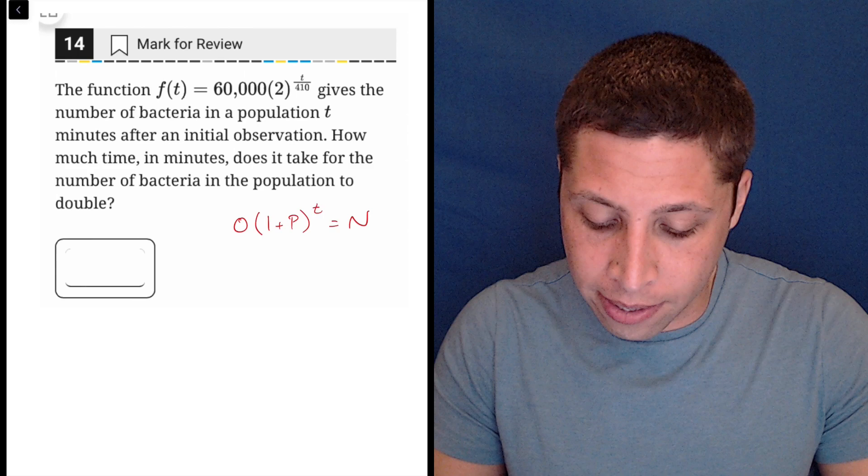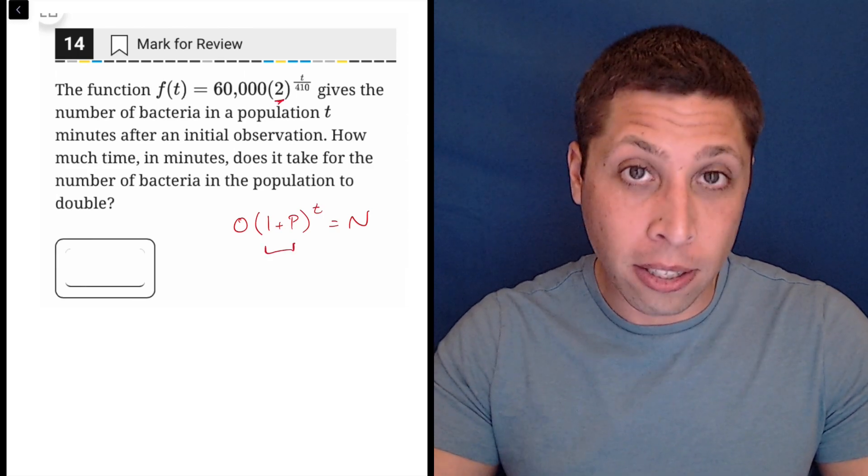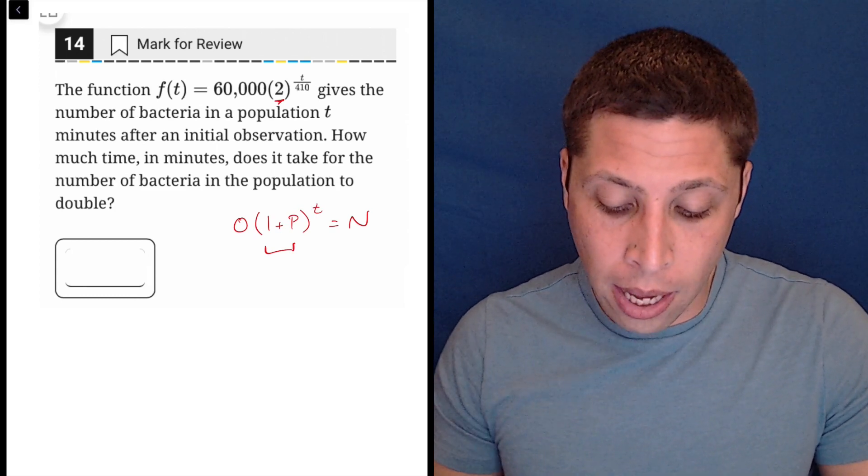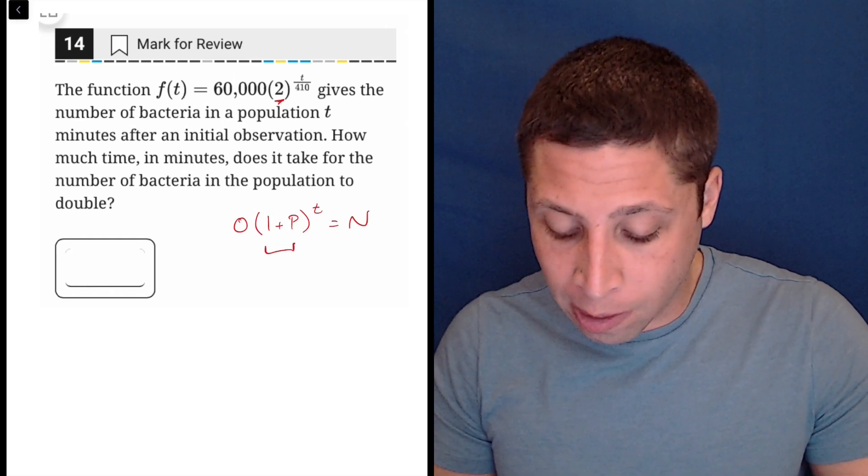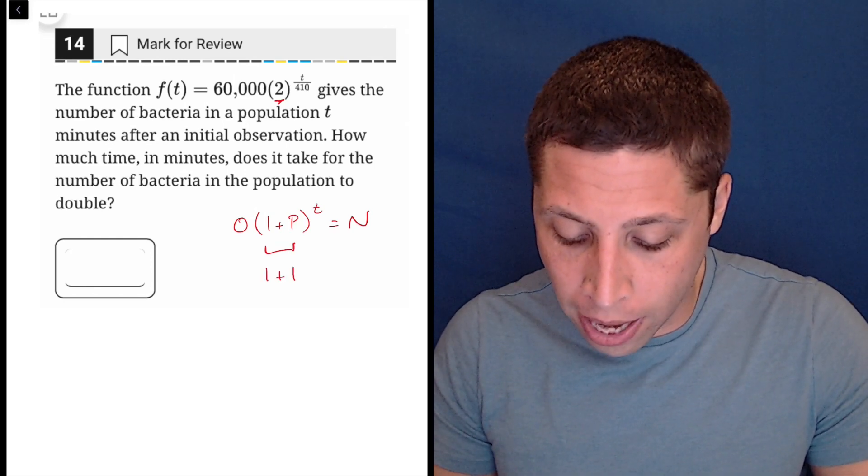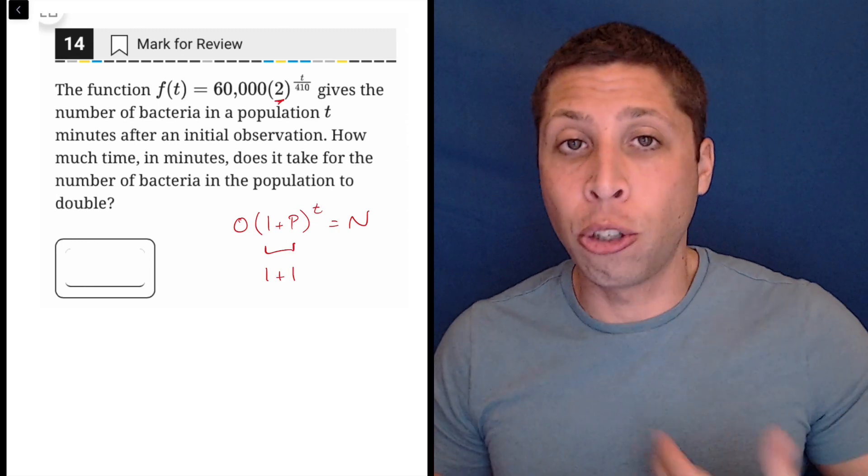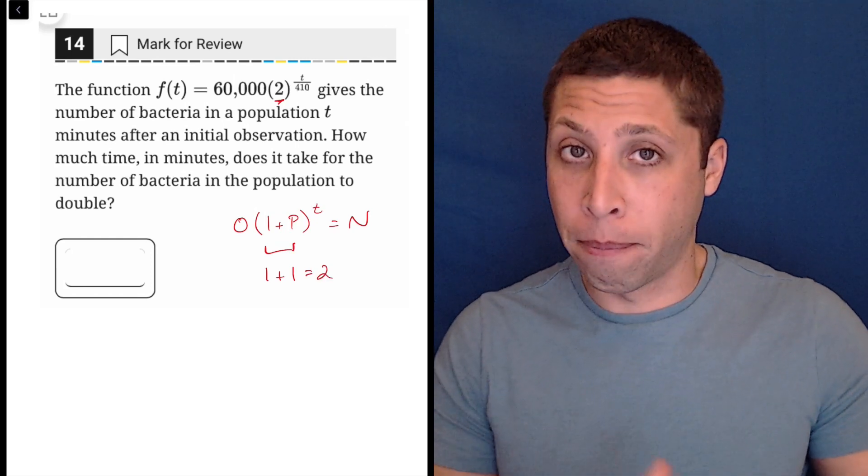The key piece is that the 2 corresponds to the percentage increase. So when they say it doubles, or when they're asking if it doubles, basically that's what the 2 is representing, it's a doubling, and that's because you are increasing by another 100%. So to double something is to increase it by 100%. That's where we get the 2 from, based on my formula.